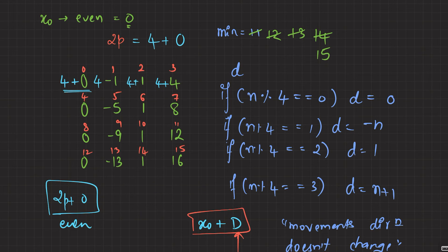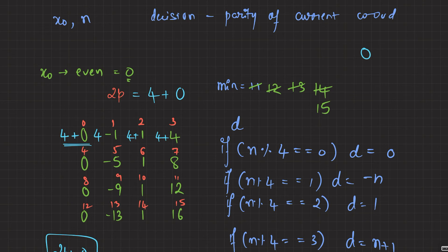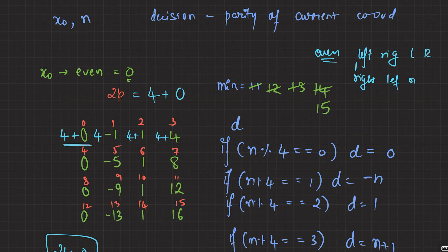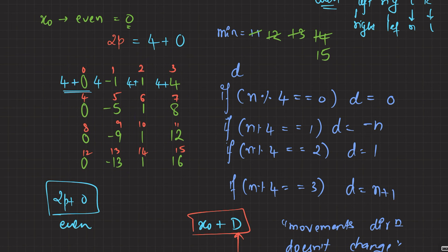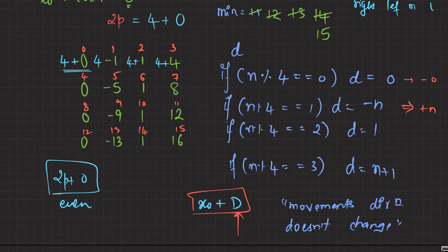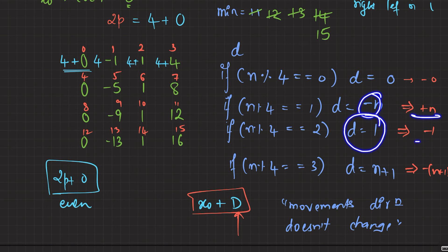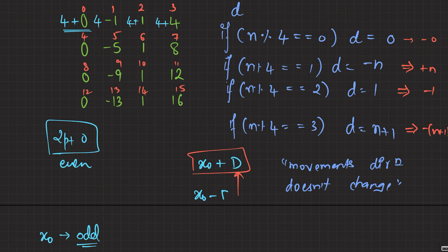Only the direction changes, so the final destination will be the same but with the sign reversed. Instead of 0 you land at −0, which is still 0. Instead of −n you get +n. Instead of 1 you get −1. Instead of n + 1 you get −(n + 1). So when x₀ is odd, the final answer is x₀ minus d.